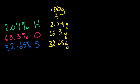Now what we need to do is figure out how many moles of hydrogen, how many moles of oxygen, and how many moles of sulfur. Then we can compare the ratios and we should be able to know the empirical formula.